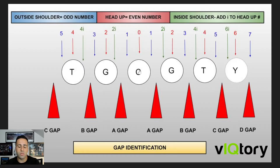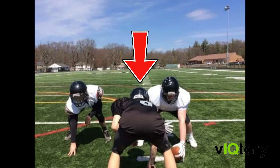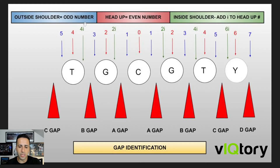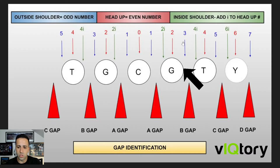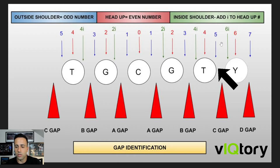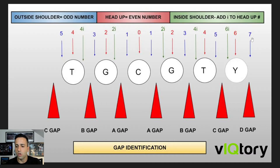Now going to the outside shoulder — anytime you are on the outside shoulder of an offensive lineman, you are in an odd number technique. You're in a one technique on the outside shoulder of the center, a three on the outside shoulder of the guard, a five on the outside shoulder of the tackle. And if you are on the outside of a tight end, we call it a seven technique. Some coaches call it a wide nine, but we like to keep the verbiage the same — outside the tight end is a seven technique.